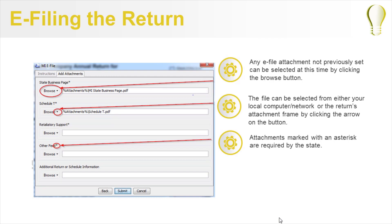For example, the state of Michigan requires attachments for the state business page, a Schedule T, retaliatory support, and other fees.